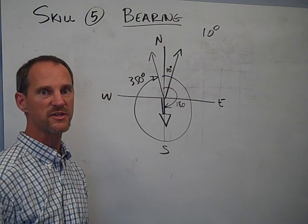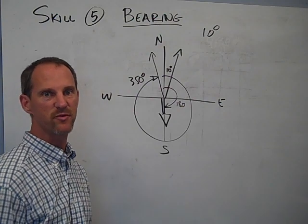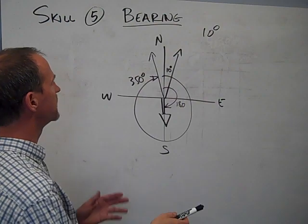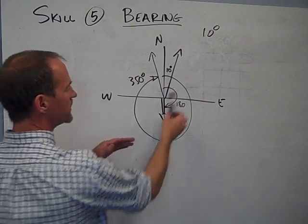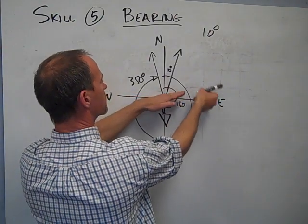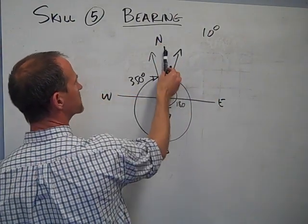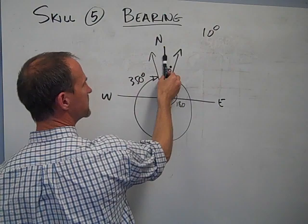Relatively straightforward skill. You'll see in our first section of the book, there are some questions that ask you to go between the understanding of polar coordinates and bearing. Polar coordinates start from the horizontal and go counterclockwise. Bearing starts from the north direction and goes clockwise.